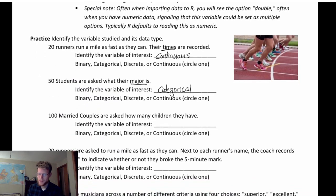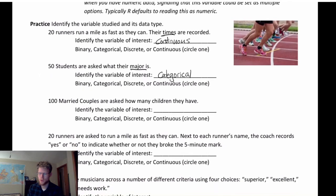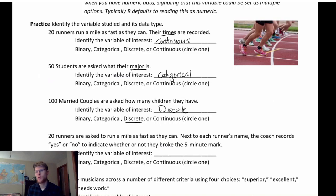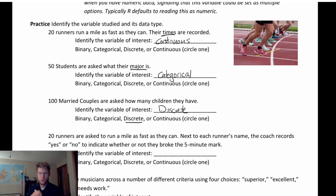Third: 100 married couples are asked how many children they have. This is discrete data because number of children can't be measured — it can't be more precise than a whole number. Responses will be 0, 1, 2, 3, and so on. There's an inherent ordering; I can record it numerically, but it's not something I measure.